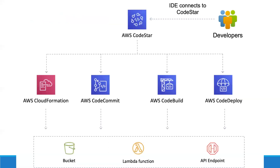We can also have an IDE that helps developers connect with CodeStar. It is free of cost, but we need to pay for the resources that are utilized — like an EC2 instance, any database, or anything else per requirement for deploying the application. It will create a CloudFormation stack, and there will be CodeCommit, CodeBuild, and CodeDeploy — those three major parts of the pipeline. The CloudFormation template will be stored in a bucket, and we can also trigger a Lambda function and have an API endpoint as well.